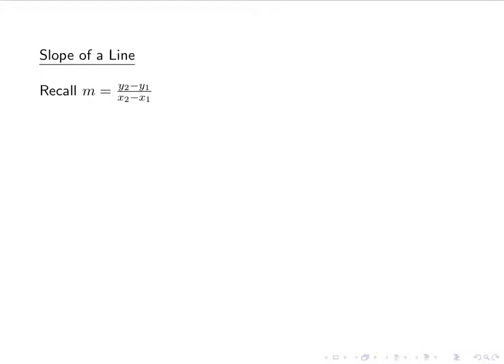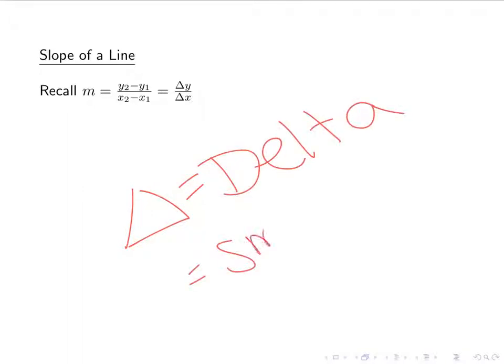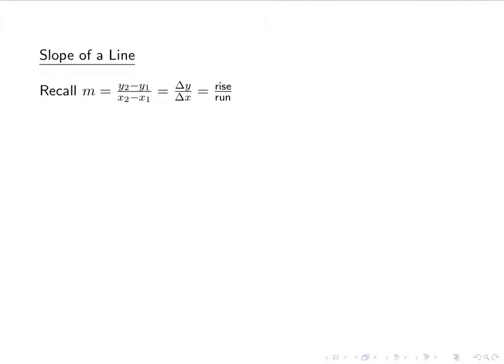Recall that the slope of a line is y2 minus y1 over x2 minus x1. The difference in y is divided by the difference in x's. This is sometimes written as delta y over delta x. Remember, this is the Greek letter capital delta. And it means small change in. So we see that come up. We're going to see something similar to it come up later when we talk about derivatives. And it's also sometimes noted as rise over run.